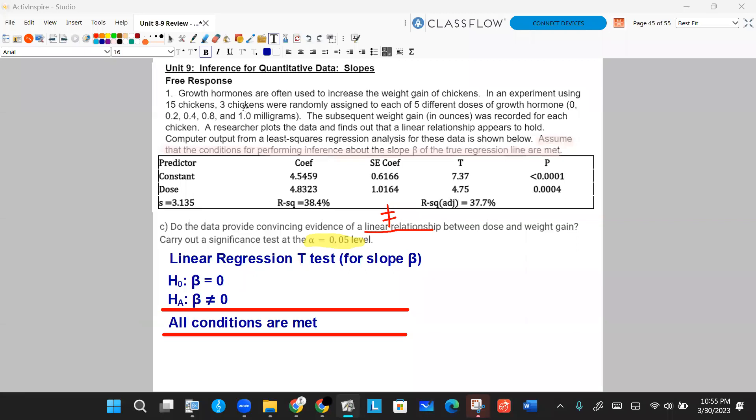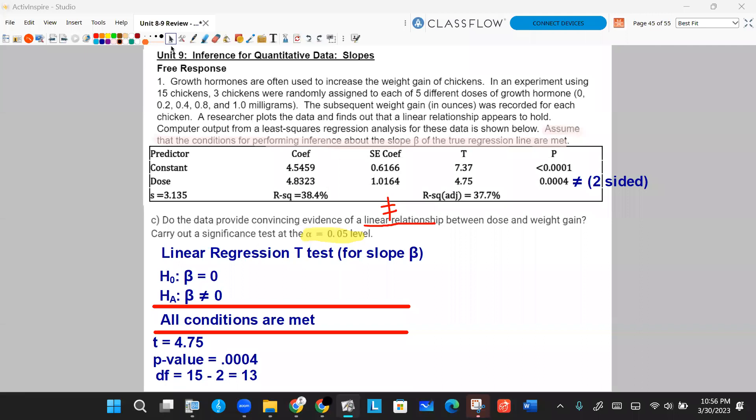Our third step is just to list the p-value, the test statistic, and the degree of freedom. And we have two of those things. So it's right on your problem here. Your t-value, your t-test statistic is right there at 4.75. Your p-value of 0.0004, no need to divide that by two because we're already doing a two-sided test anyway. And list your degree of freedom is always going to be n minus two. We have 15 chickens, so it's going to be 13.